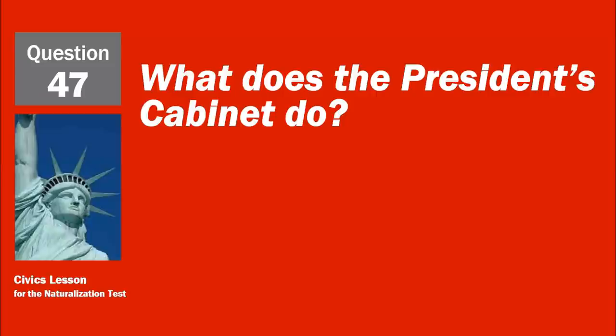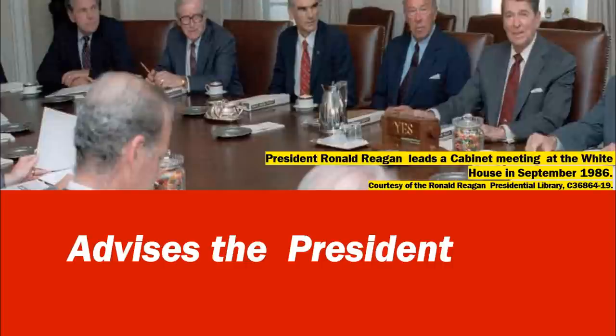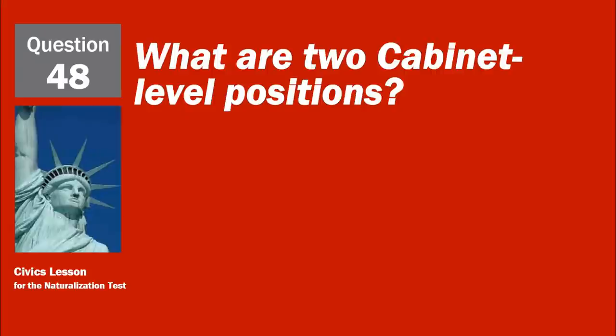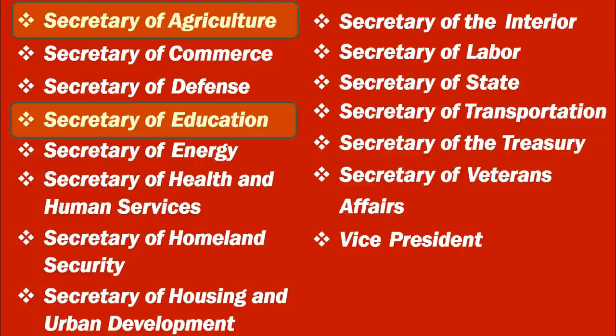What does the President's Cabinet do? It advises the President. What are two Cabinet-level positions? Secretary of Agriculture and Secretary of Education.